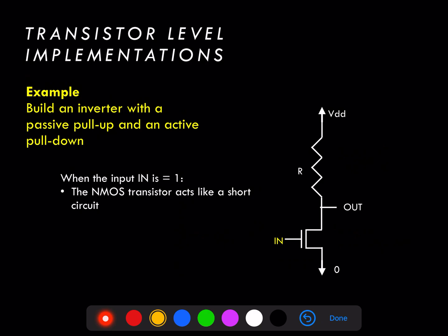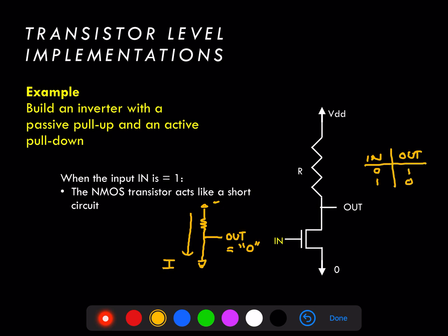In the opposing case, when the input to the NMOS transistor is equal to a one or close to the power supply, the NMOS transistor turns into a short circuit and the output is directly connected to ground, becoming a digital zero. Notice that in this situation we still have current flowing through the resistor even at steady state, since the resistor still makes the connection between VDD and zero, which can result in considerable power dissipation and is a disadvantage of this type of inverter implementation. Overall, the output is the inverse of the input voltage and we have indeed built an inverter.